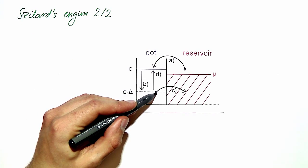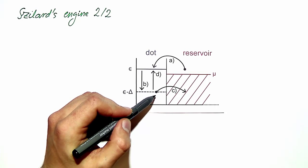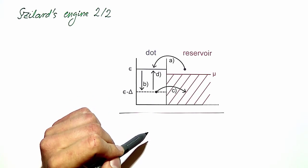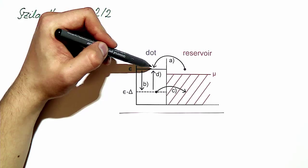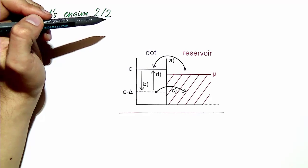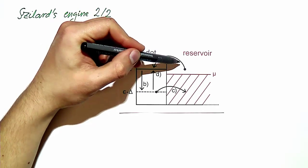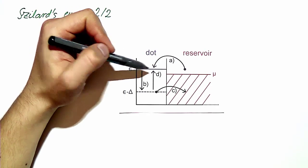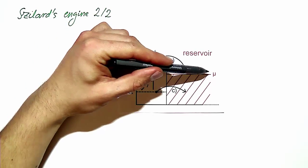Then in step C, we have to repeat the measurement of the occupancy of the dot until we see that the dot is empty. The probability of detecting that an electron has tunneled into the dot is the probability of finding an electron at energy epsilon in the reservoir of electrochemical potential mu.